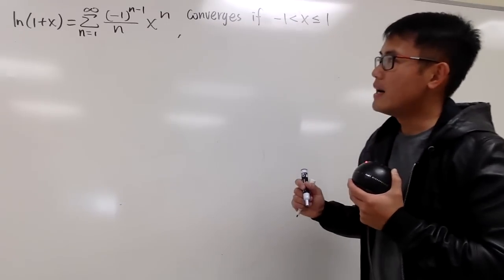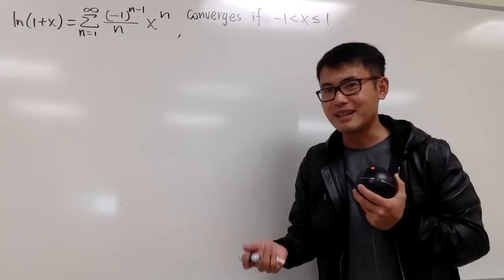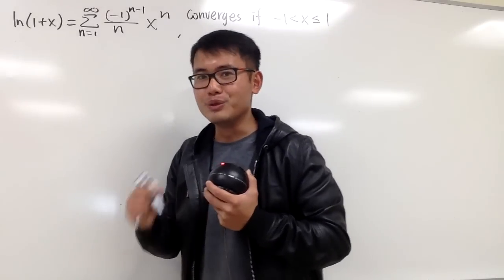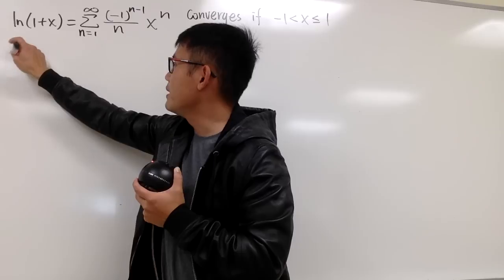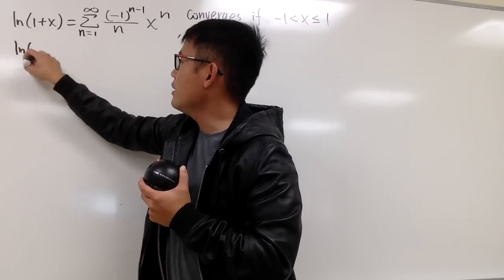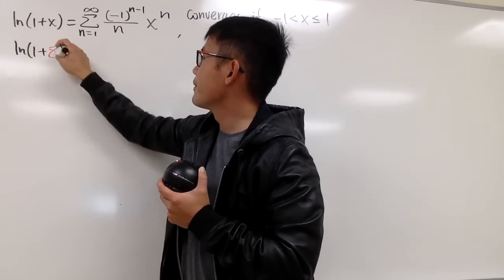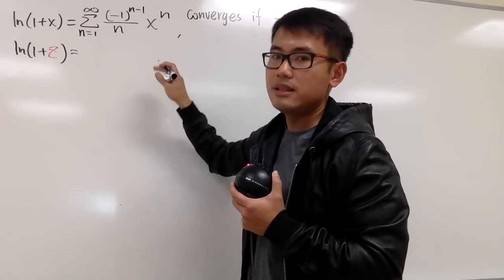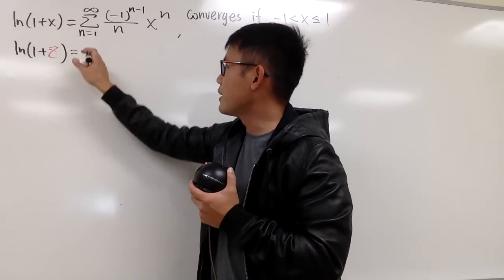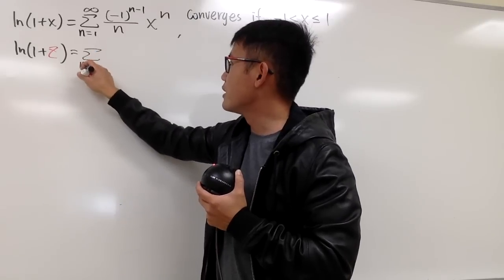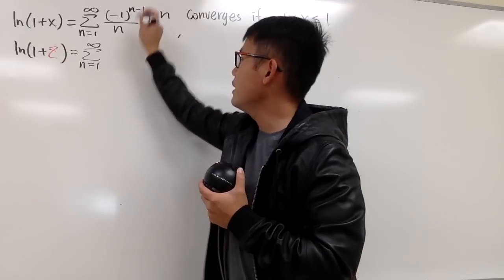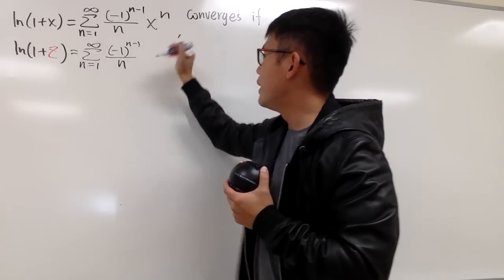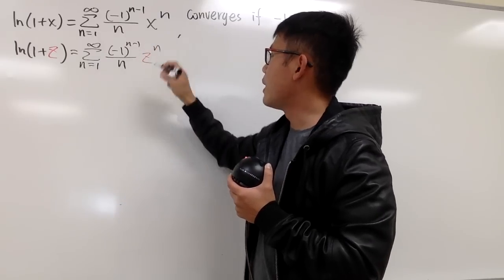Since we're talking about complex numbers, we use z instead of x. So let me write this as ln of 1 plus z, which is equal to the sum when n goes from 1 to infinity of negative 1 raised to the n minus 1 power over n, times z raised to the nth power.